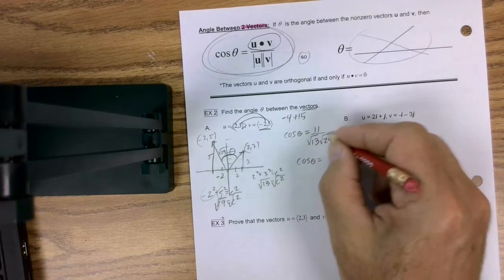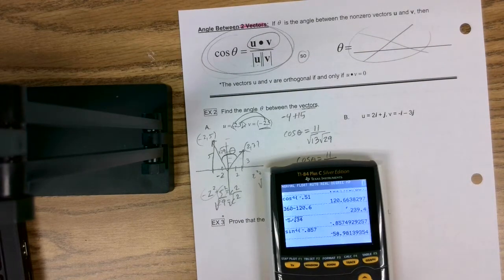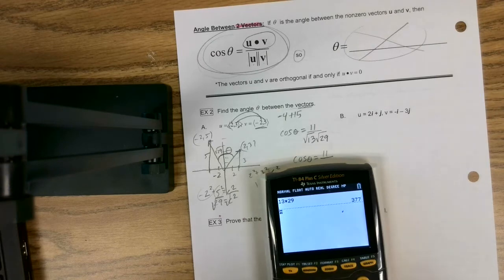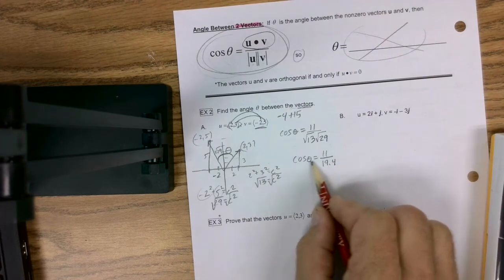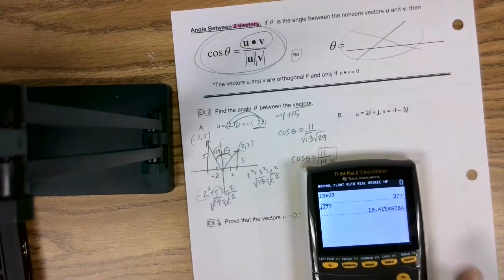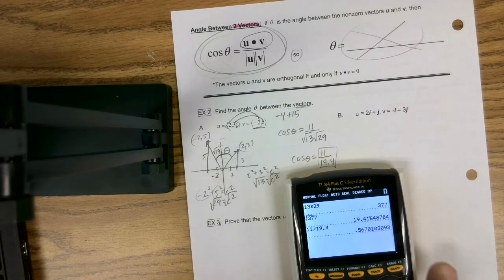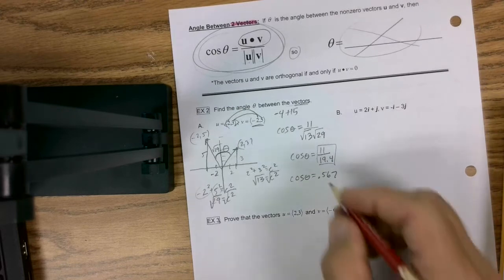Now a lot of students can get to here and then they really butcher it because they're not sure what to do with this. Now what I like to do, rather than figure out what this is as a decimal and this is as a decimal, I just like to kind of do this in one step. So what I'm going to do: turn my good old calculator on, and I'm going to take 13 times 29, enter. And I'm going to take the square root of that number, and I get 19.4. So I get 19.4. Now the question is, how do I go from a weird looking thing like this to actually finding my theta? Well, I have to first turn this into a decimal. So I'm going to go 11 divided by 19.4.